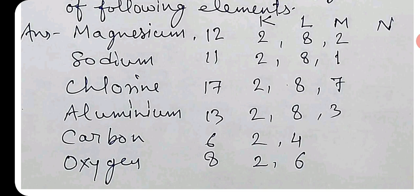Aluminium 13, 2, 8, 3. Carbon is 6, so 2, then 4. Oxygen comes 8, then 2 and 6 will be K and L.